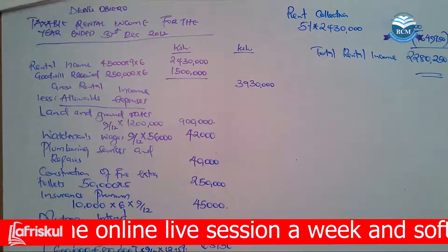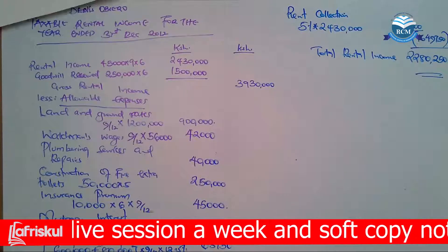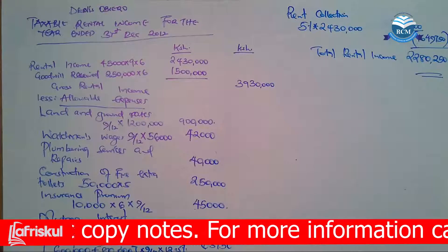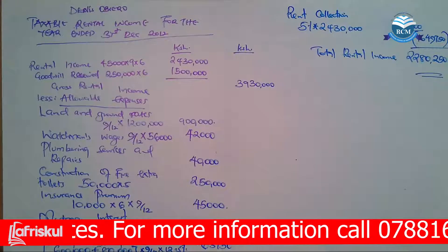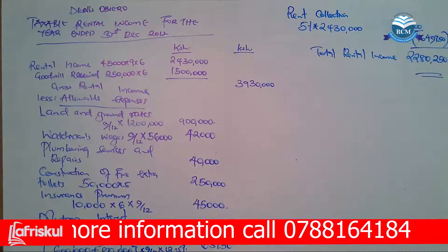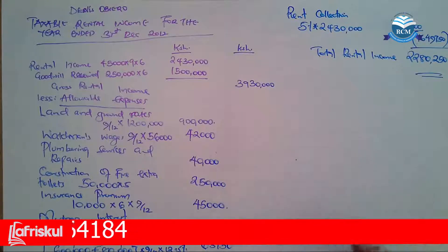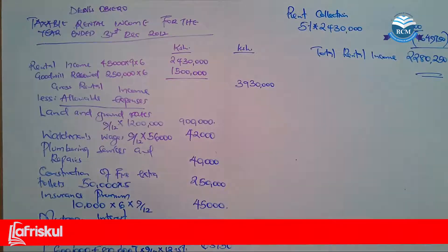Then you are going to do part (ii), where the examiner wants you to calculate the total taxable income of Dennis Obiero for the year ended 31st December 2012.